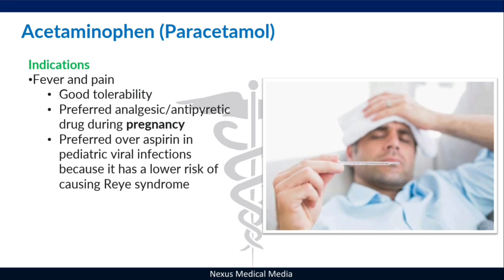If you give aspirin to someone with a viral infection such as influenza, the patient may develop Reye's syndrome, which is very dangerous to the liver. Paracetamol is contraindicated in severe liver impairment. Key points to remember: the toxic dose is more than 7.5 grams per day in adults, and the antidote is N-acetylcysteine (NAC).